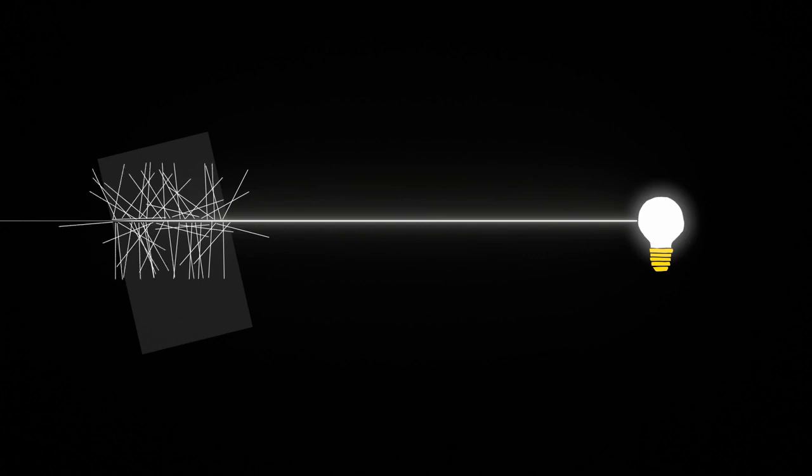This animation shows a light bulb and a rectangle of scattering material. Once again, the bulb emits a beam of white light that travels to the surface. But in this case, the angle of incidence is unimportant. Light scattering materials do not by themselves bend light.